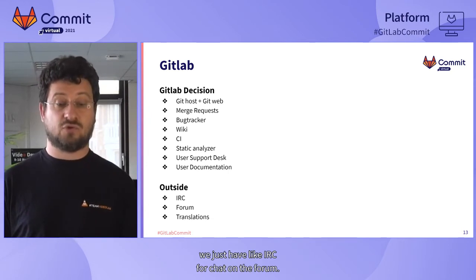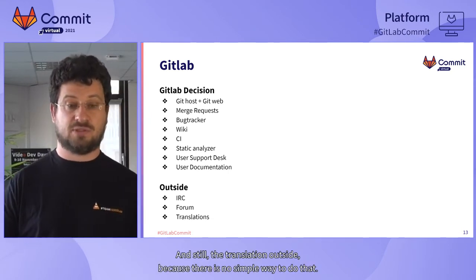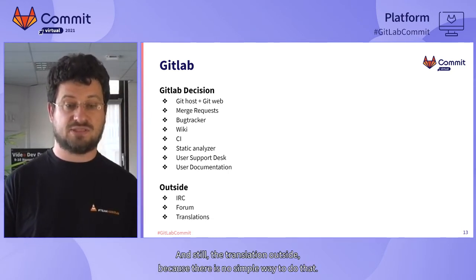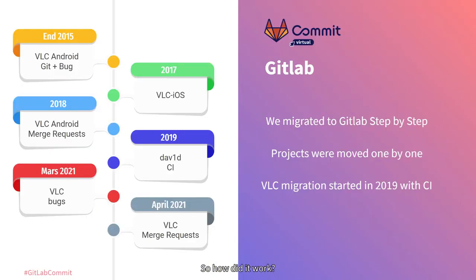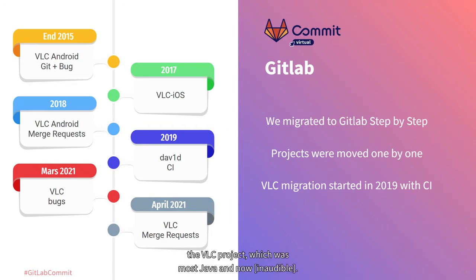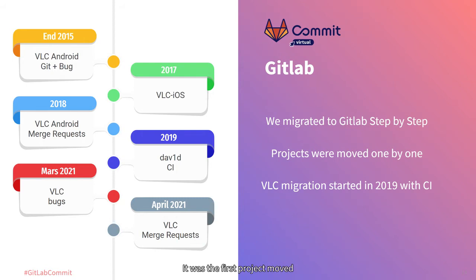Basically, we have GitLab for almost everything now. Outside, we just have IRC for chat and the forum, and still the translation outside because there is no simple way to do that. We started with the Android project — the VLC Android project, which was mostly Java and now Kotlin. In 2015, we moved this one directly to GitLab. That was the first project we moved, and we were just using it as a normal Git repository and a bug tracker.